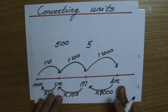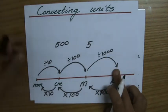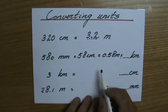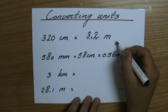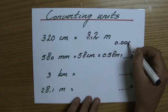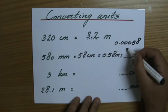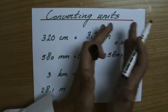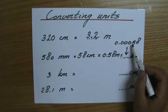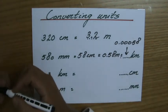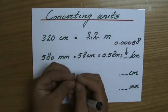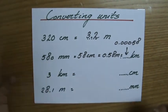Now from meters to kilometers, divide by a thousand. So 0.58 divided by 1000 gives 0.00058 kilometers — that's three decimal places moved. It makes sense: a millimeter is very short and a kilometer is very long, so 580 mm is only a tiny fraction of a kilometer.